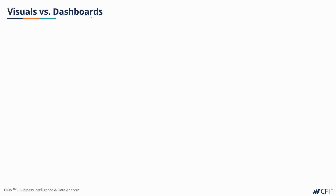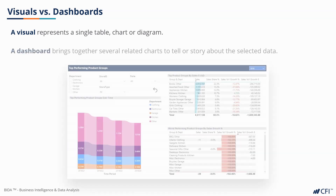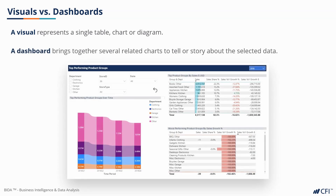The terms visuals and dashboards are used a lot in BI, so let's take a quick look at what they mean. A visual represents a single table, chart, or diagram. A dashboard brings together several related charts to tell a story about the data.